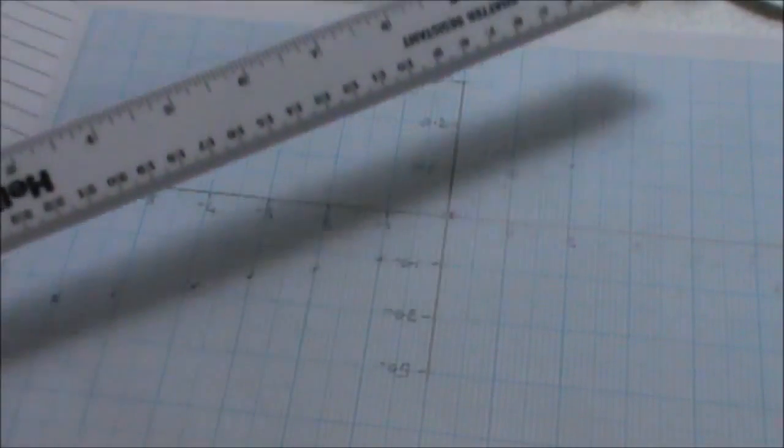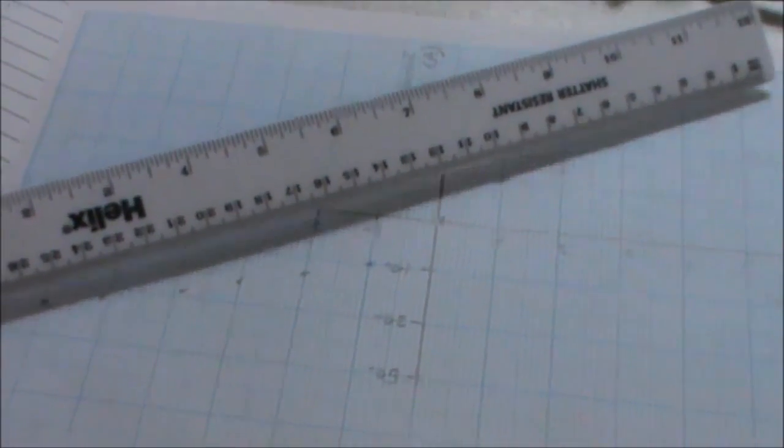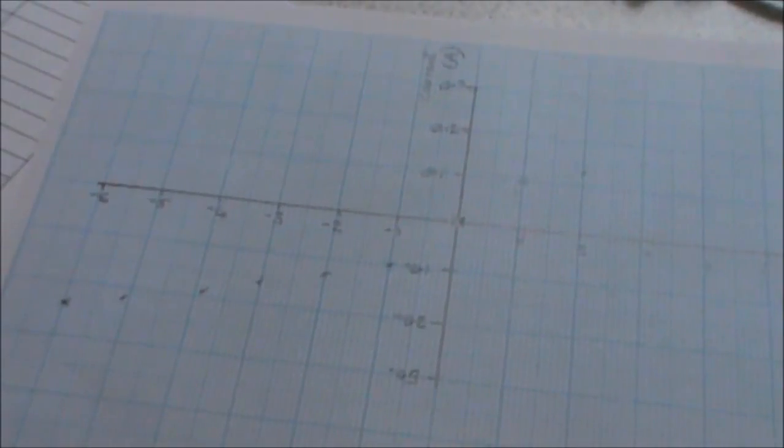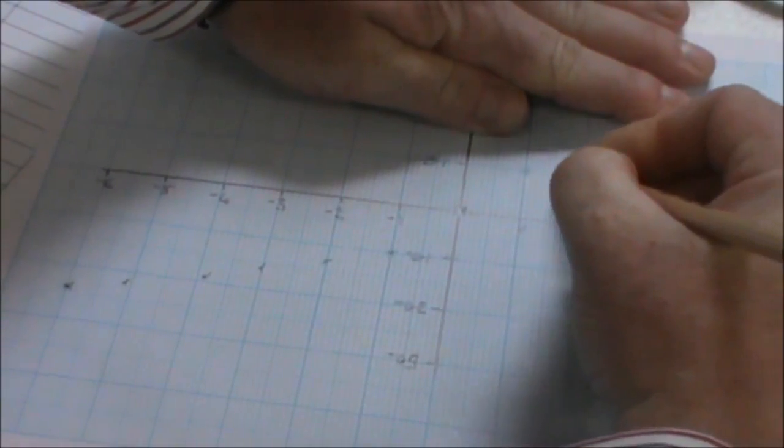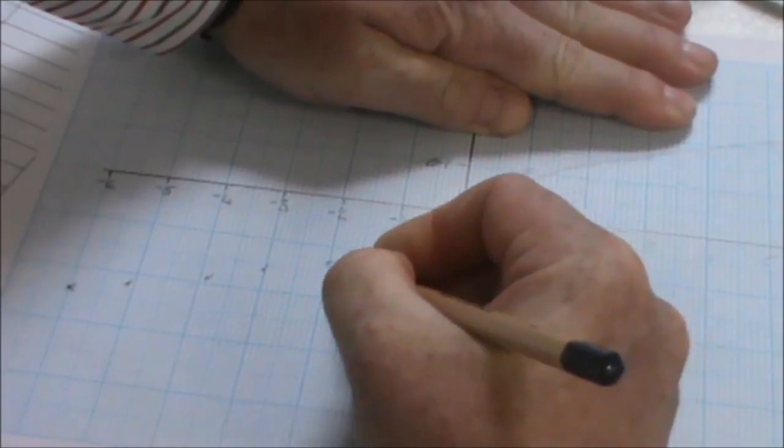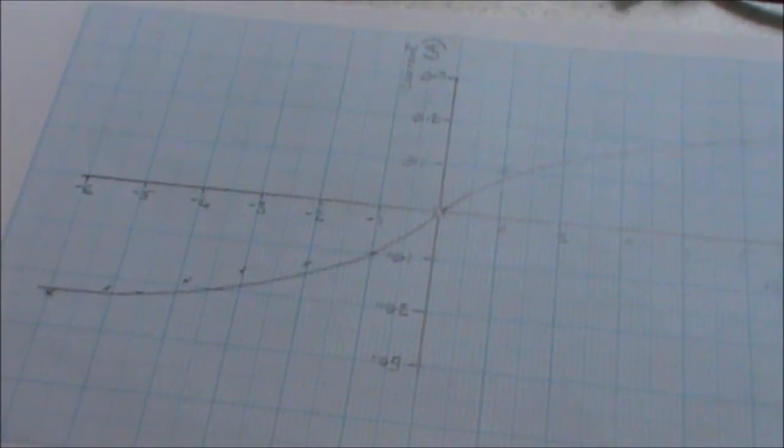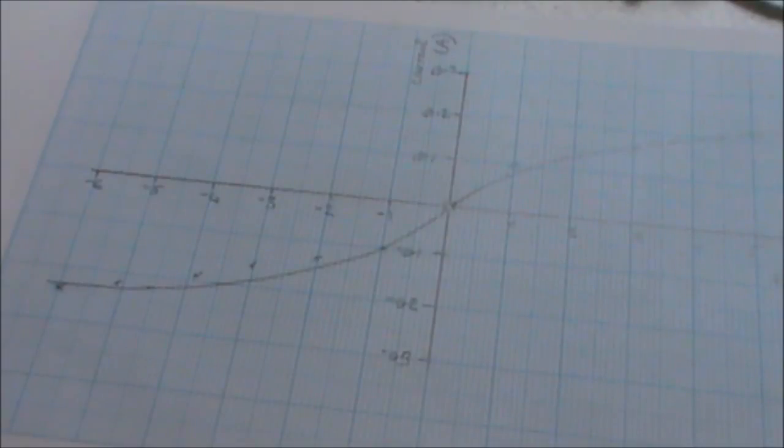Now if we look at our graph, we can see that we cannot put a straight line of best fit on these points. So we have to fit a curve. Now this is an S curve starting here, running through zero, and ending over here.